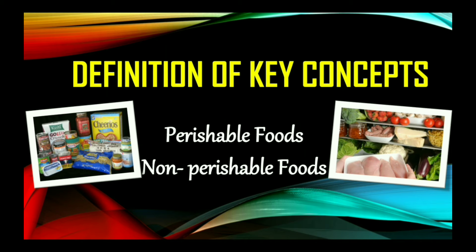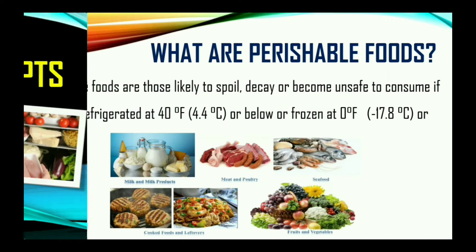Now, what are perishable foods and non-perishable foods? Let us look at some context clues. Your prior knowledge should tell you what the definition of perishable is. When we apply it in the context of food and nutrition, perishable foods are those likely to spoil, decay, or become unsafe to consume if not kept refrigerated at 40 degrees Fahrenheit or 4.4 degrees Celsius or below, or frozen at 0 degrees Fahrenheit or 17.8 degrees Celsius or below.